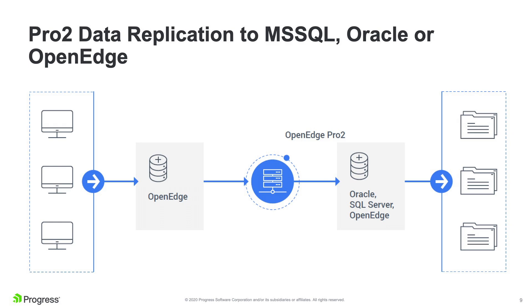You have your OpenEdge application on the left where end users are doing data entry and light reporting. Pro2 is in the middle, capturing changes and replicating data to Oracle, SQL Server, or OpenEdge — where all reporting happens. By offloading reporting users from OpenEdge, application users get better performance. Financial users running legacy reports are moved to a different platform, typically SQL Server or Oracle.